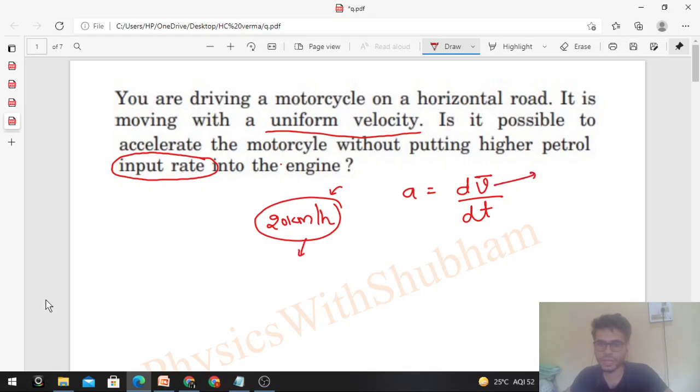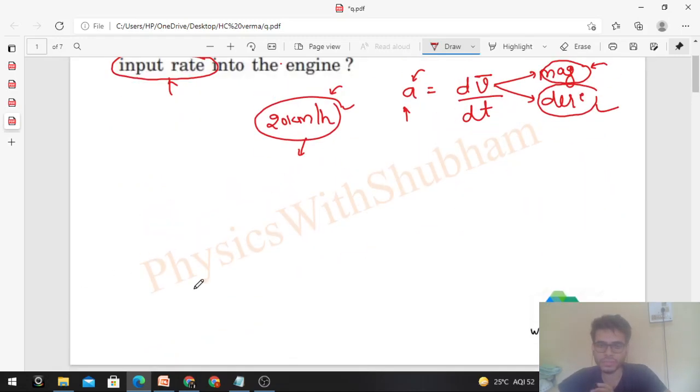Velocity has both magnitude and direction. So direction we can change. The magnitude of the velocity is speed which you cannot change. It will depend on your petrol input rate, but direction will not depend. Direction change keeping the speed constant, so the velocity changes. Velocity change means acceleration. So this acceleration can happen without changing the petrol input rate.